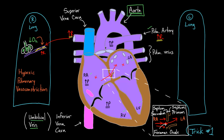Not all blood in the right atrium goes through the foramen ovale — some blood passes through the normal way, going through the tricuspid valve into the right ventricle. This is actually a good thing, because we want the right ventricle pumping, squeezing, getting practice so those muscles get stronger. The right ventricle then pumps blood into the left and right pulmonary arteries, where it faces a lot of resistance.